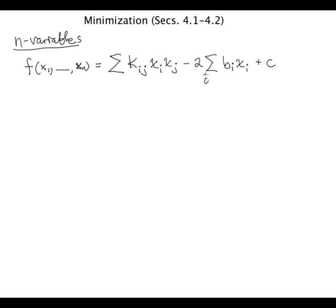And these sums are, of course, over i and j running from 1 to n. And the problem is to minimize this. So find these numbers x1 through xn such that f of that point is as small as possible.